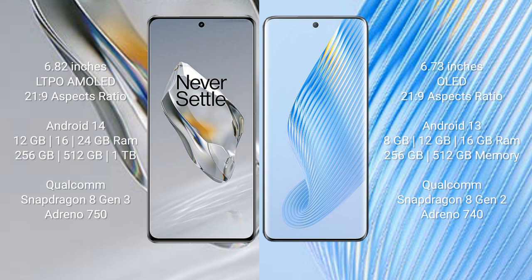OnePlus 12 runs on Android 14, while Honor Magic 5 runs on Android 13. OnePlus 12 comes with 12GB, 16GB, or 24GB RAM and 256GB, 512GB, or 1TB internal storage, powered by a Qualcomm Snapdragon 8 Gen 2 processor with Adreno 750 GPU.